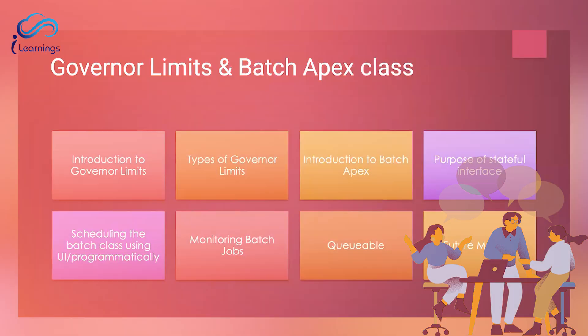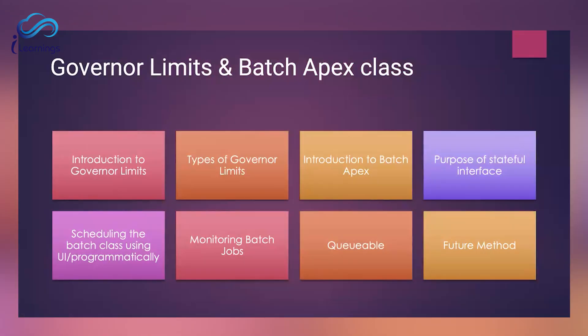Let me explain what exactly iterable means. Whenever you are running a loop, you are iterating over all the values of a list, set, or whatever collection you have used. For every value in that collection, you iterate and perform certain operations. In Salesforce, a custom iterable provides developers the power to iterate over records in a highly customized manner, defining a specific sequence for traversing records within a Salesforce object.